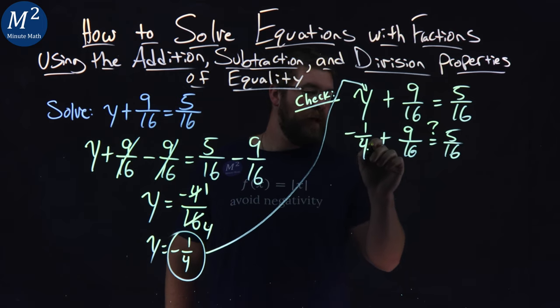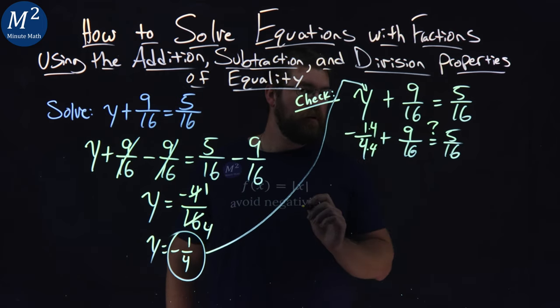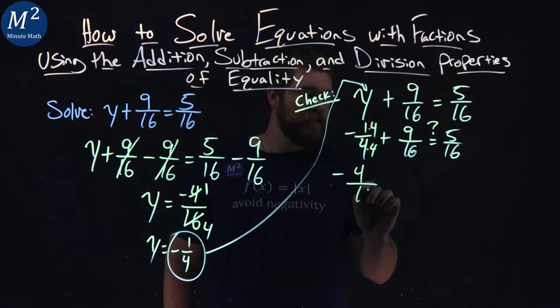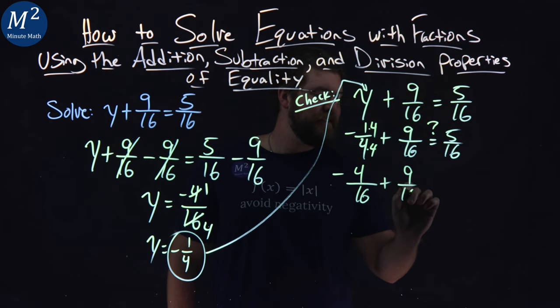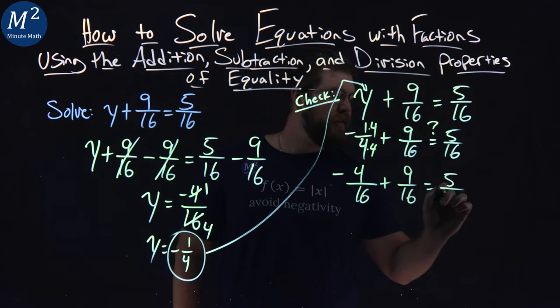Well, if I multiply this by 4 over 4, I'll have a 16 in the denominator. So, now I have negative 4 up top over 16 plus 9 16ths equals 5 16ths.